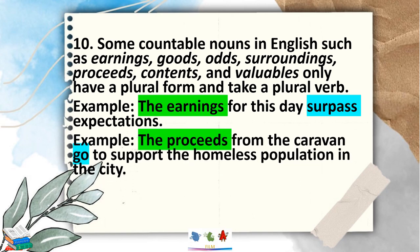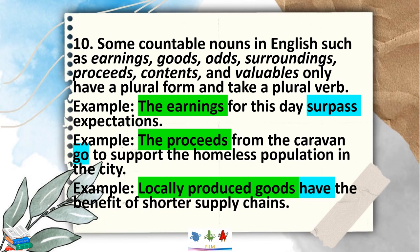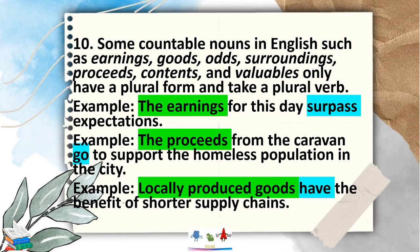More examples of Rule 10: 'The proceeds from the caravan go to the support of the homeless population in the city.' Proceeds is countable, so it takes a plural verb: 'go.' Another: 'Locally produced goods have the benefits of shorter supply chains.' Goods can be counted, so we use the plural verb 'have.'